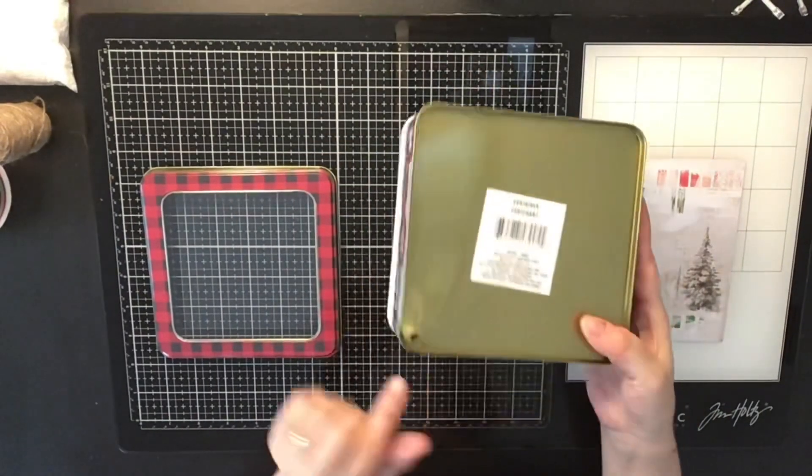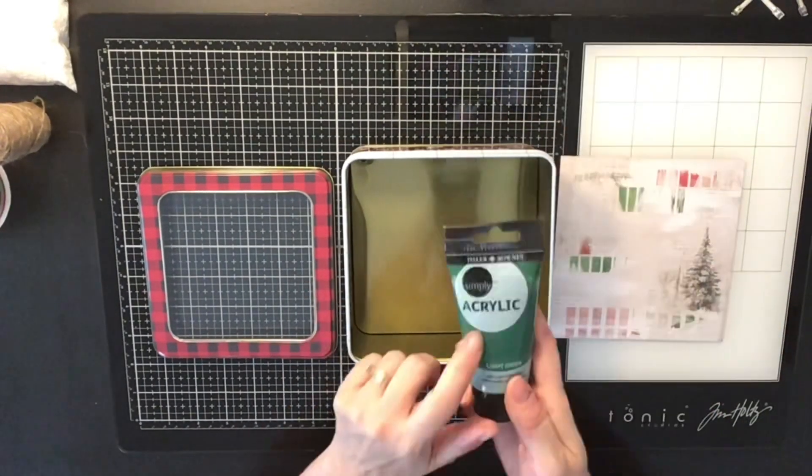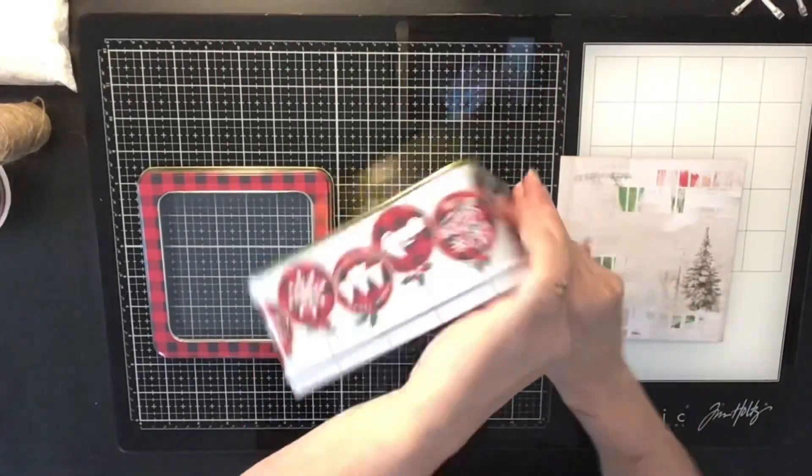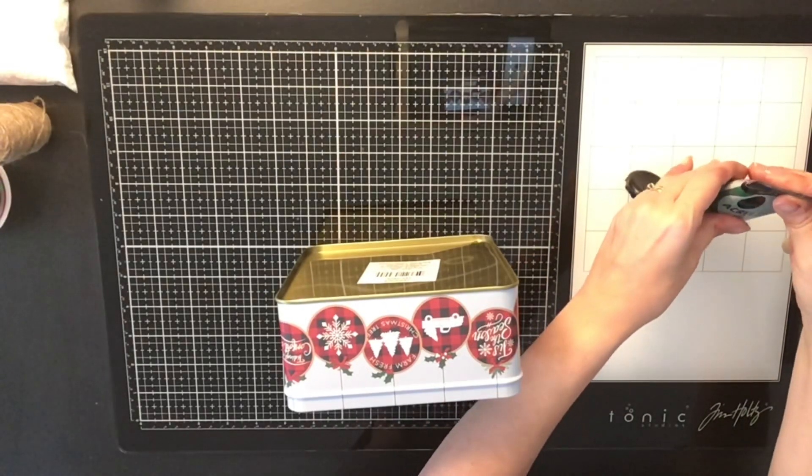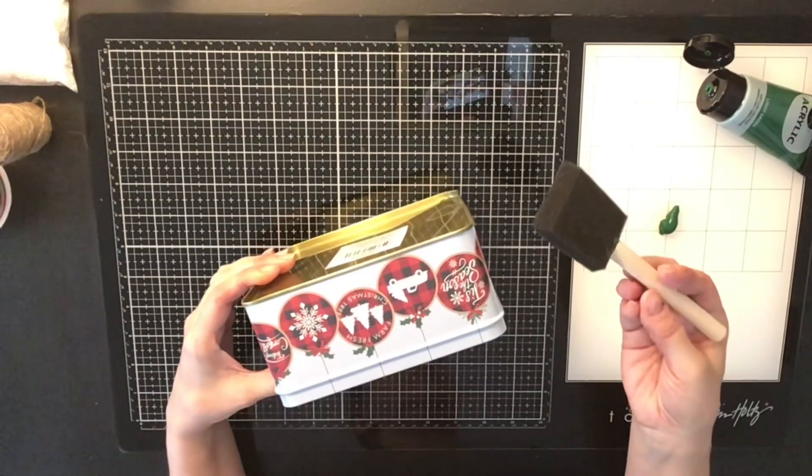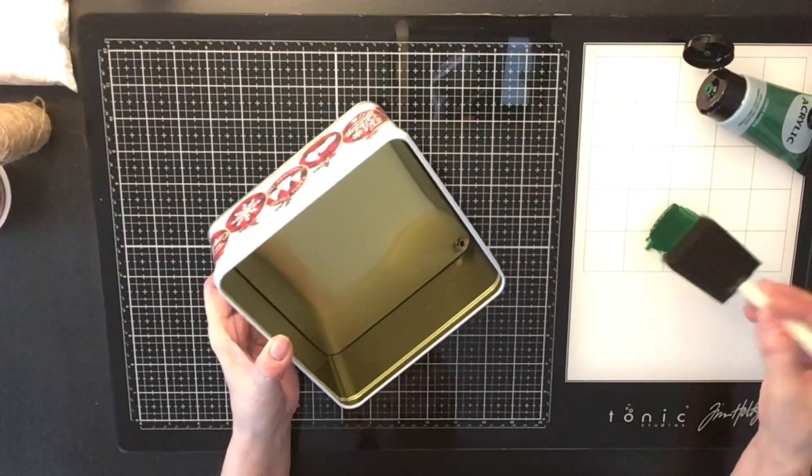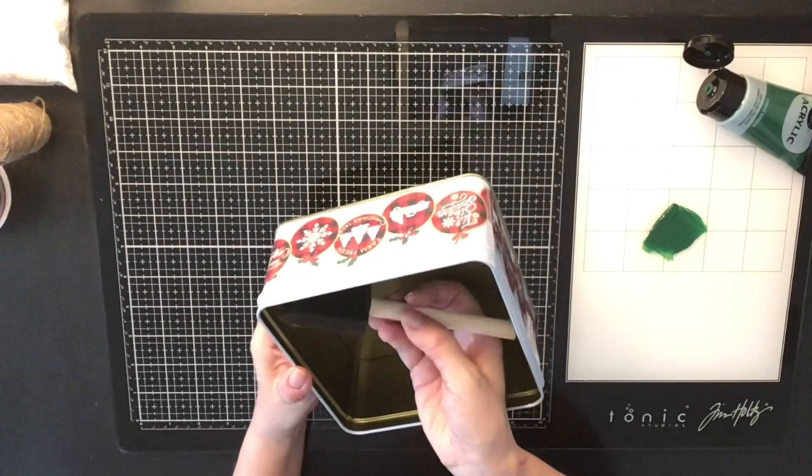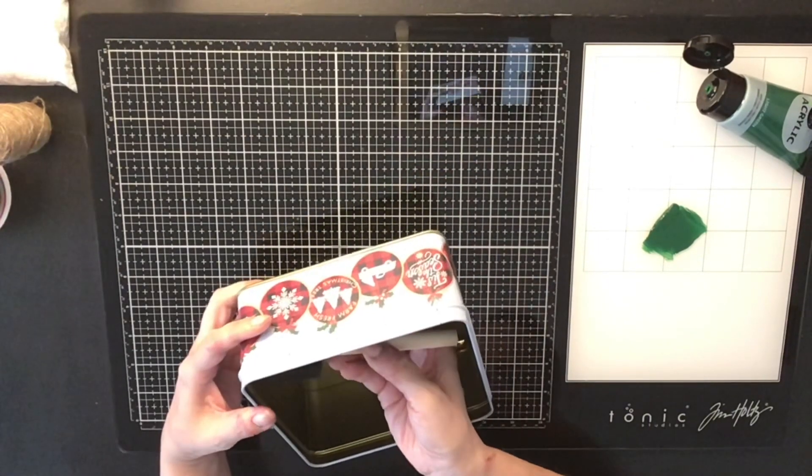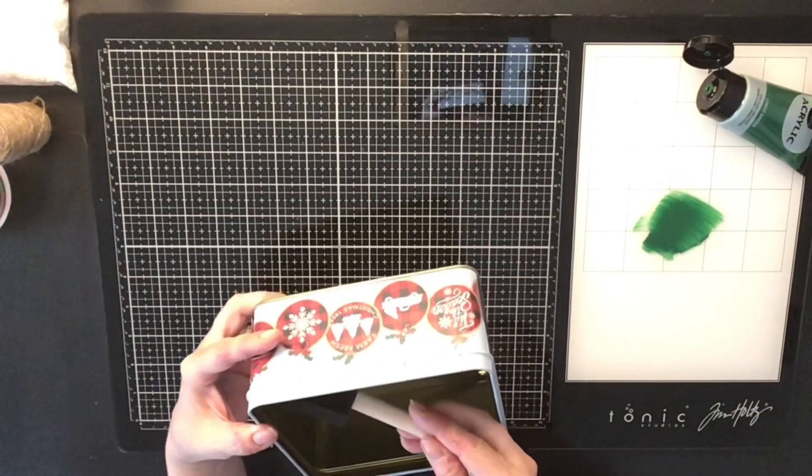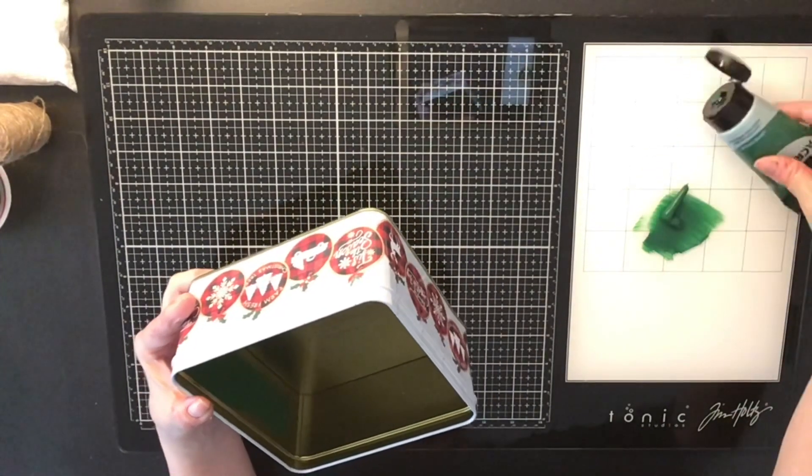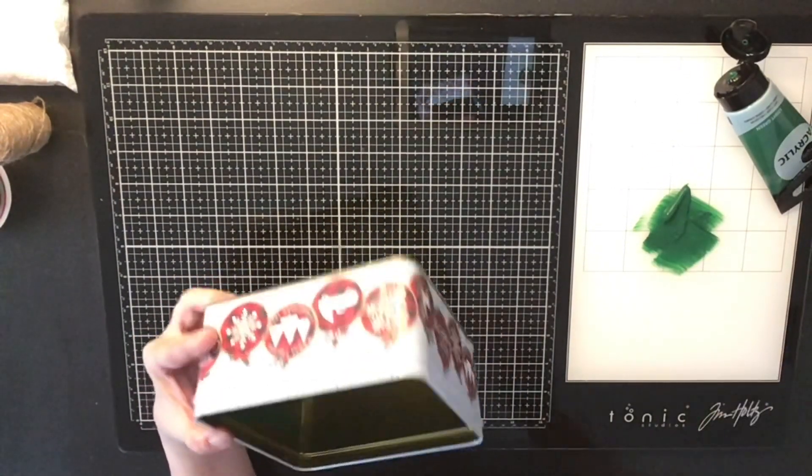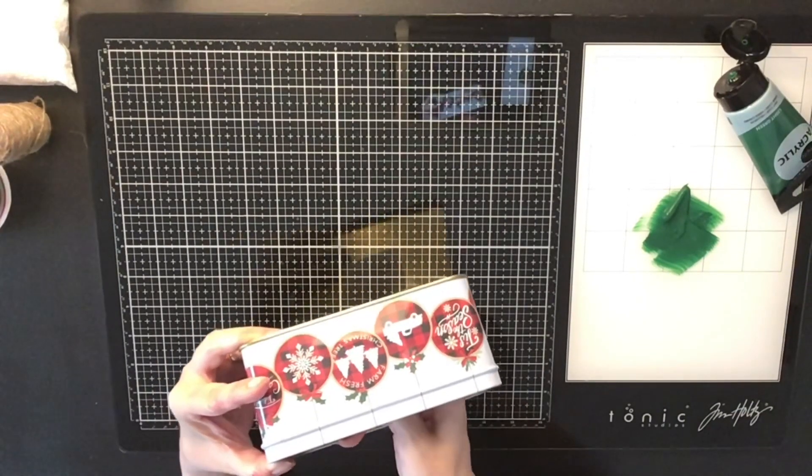So the first thing I did is I took my little piercing tool that my husband had and I just put a hole in the back of the tin to be able to string my lights through. Then the next thing I did is the inside of the tin was gold and I didn't want to use gold. So I want to make a little scene. So what I'm going to do is I'm just taking my green acrylic paint. You can use any color you want that's Christmasy.